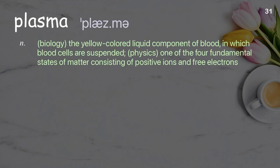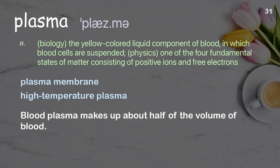Plasma: in biology, the yellow-colored liquid component of blood in which blood cells are suspended; in physics, one of the four fundamental states of matter consisting of positive ions and free electrons. Examples: plasma membrane, high-temperature plasma. Blood plasma makes up about half of the volume of blood.